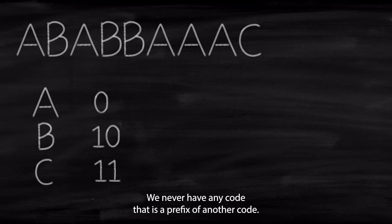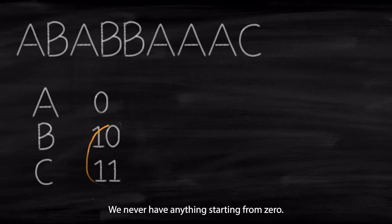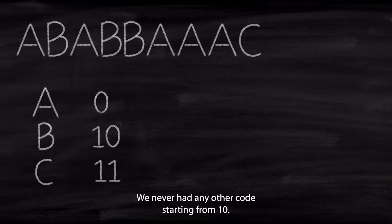We never have any code that is a prefix of another code. So this code is 0. We never have anything starting from 0. This code is 1, 0. We never had any other code starting from 1, 0 and that's it.